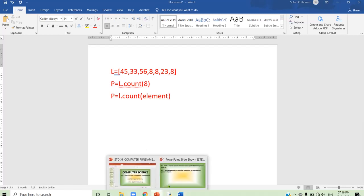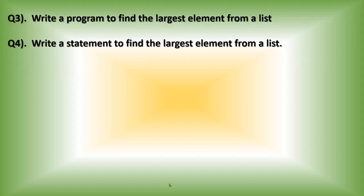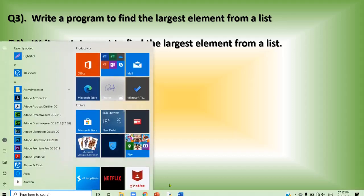That is the way you can also write that answer. Now see the next question: write a program to find the largest element from a list. You have to create the list and then find out the largest element from it. The procedure is the same — what you did in the previous program, the same procedure you have to follow here. First create the list, then find out the largest element.